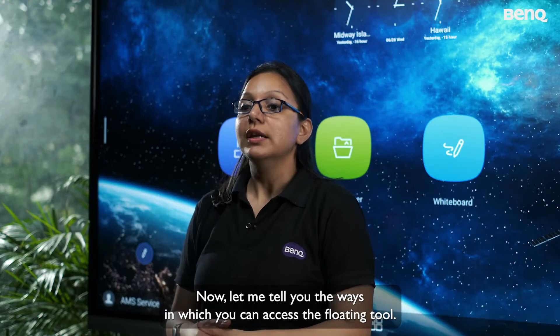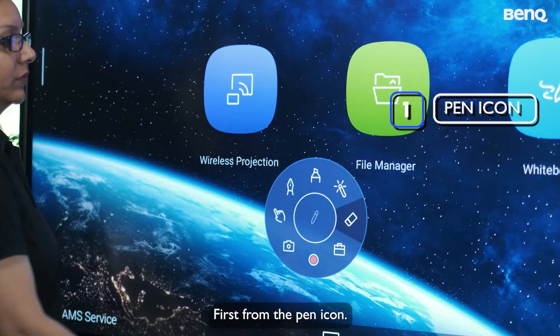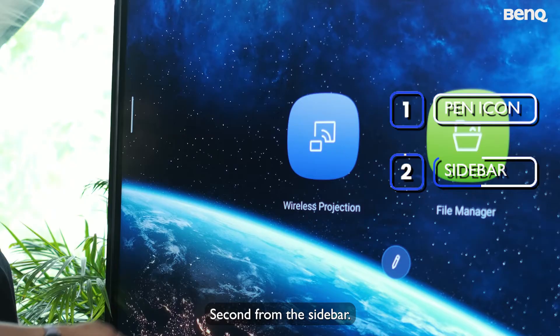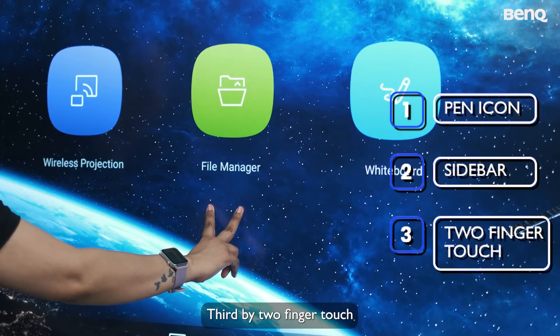Now let me tell you the ways in which you can access the floating tool. First, from the pen icon. Second, from the sidebar. Third, by two-finger touch.